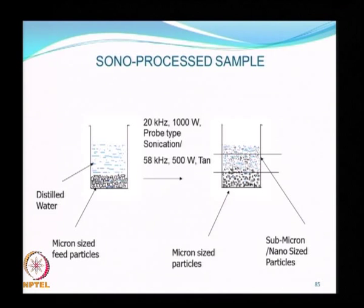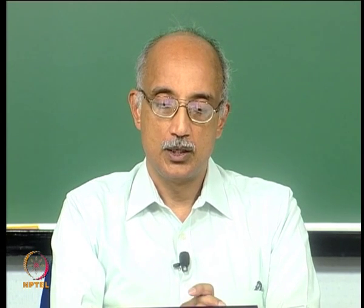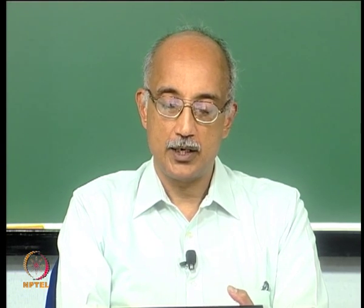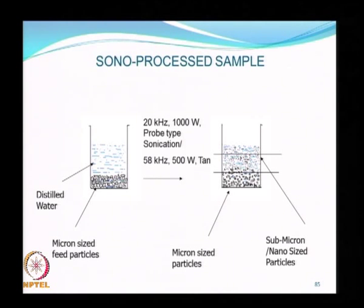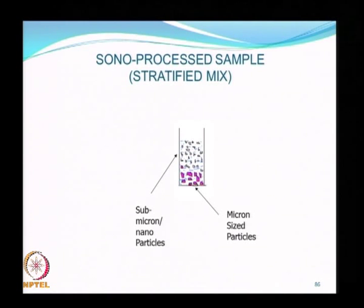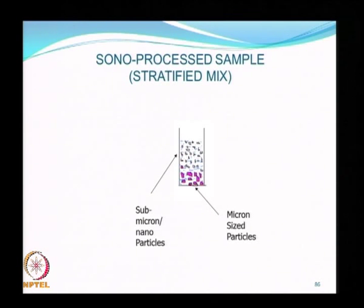This stratification suggests that combining the sonoprocess with a beaker decantation process allows you to not only make nanoparticles but also quickly collect them based on sedimentation characteristics. From a beaker decantation setup, you can take the top layer and drain it into a collector enriched in nanoparticles, while the bottom layer can be recycled for further size reduction. Alternatively, you can remix the stratified layers to produce a homogeneous suspension useful in applications requiring a range of particle sizes.